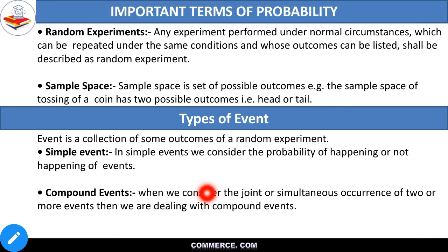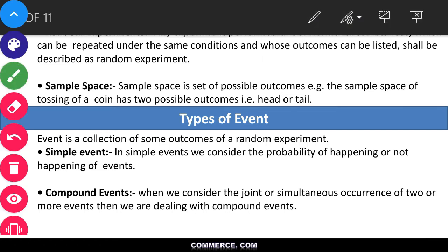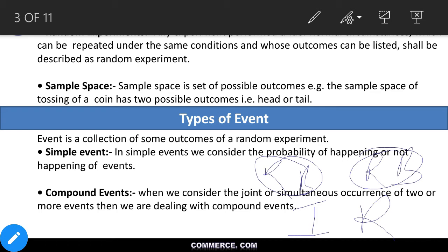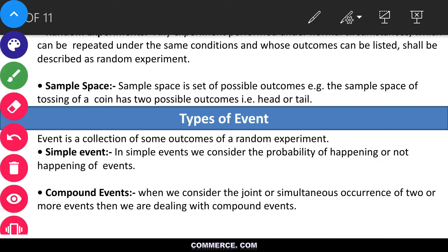Compound event means — for example, like a bucket with red and blue balls. Say we have bucket 1 and bucket 2, both containing red and blue balls. If I'm asking you about the probability involving both buckets — say picking a red ball from bucket 1 — I'm talking about a compound event combining two things together. That is compound event — clear.